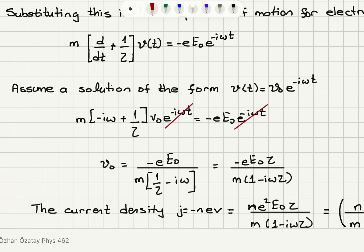The e to the minus i omega t terms cancel, and we find V0 to be minus e (electron charge) times E0 (electric field), divided by m times (1 over tau minus i omega). If I multiply this by tau over tau, I obtain m(1 minus i omega tau) in the denominator and tau in the numerator. So this will be our V0.